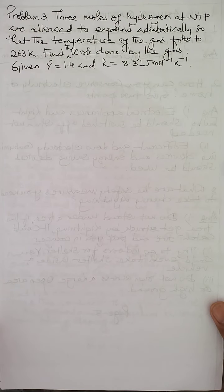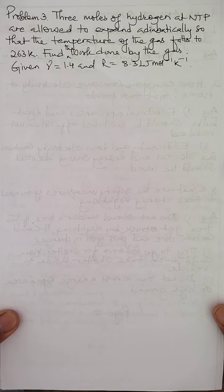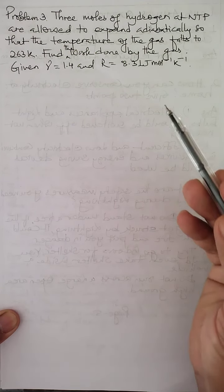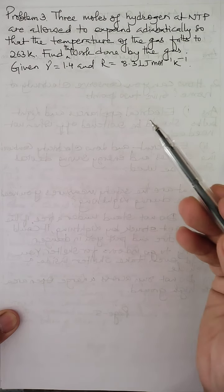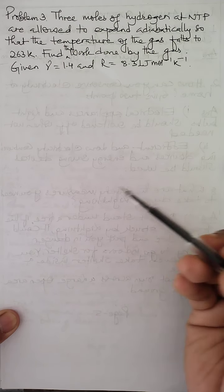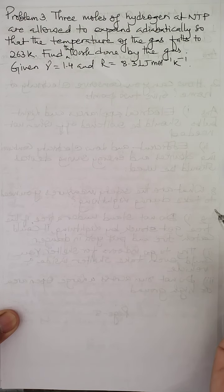Alright dear children, now we will solve two more numericals. With these two numerical problems, the chapter on isothermal and adiabatic processes will get completed. Problem number three is the second last numerical, and it is also a problem to find the work done by the gas under an adiabatic process.